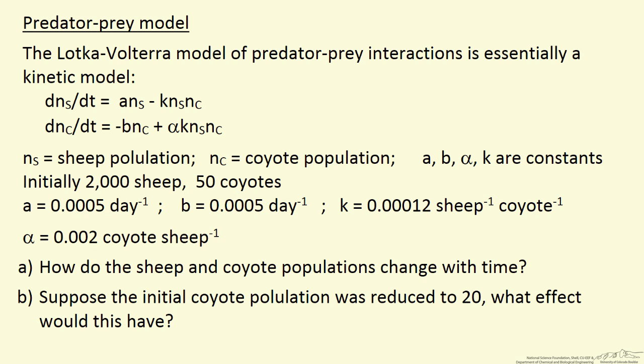Suppose instead of 50 coyotes, which is what we solve initially, we start with 20 coyotes and the same number of sheep. How is the result different?